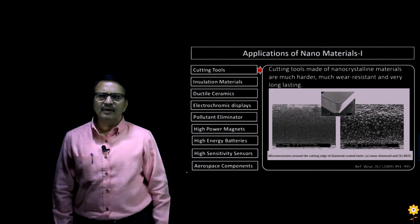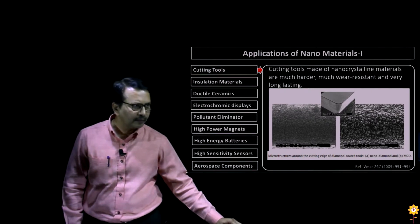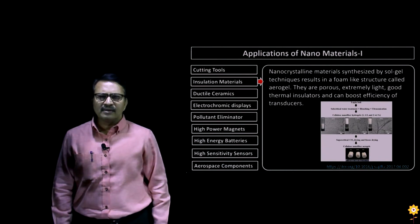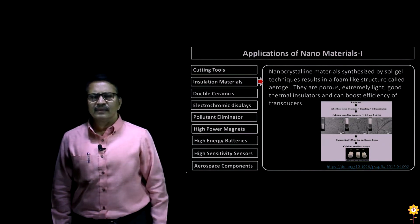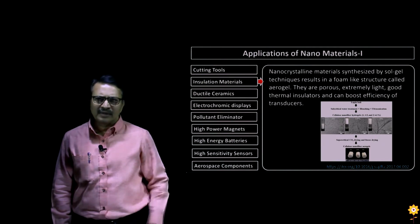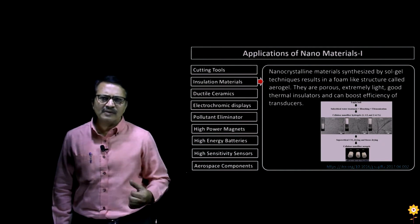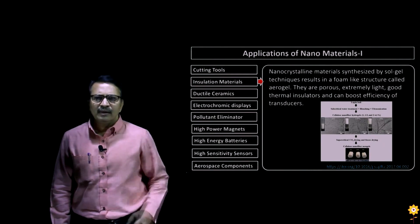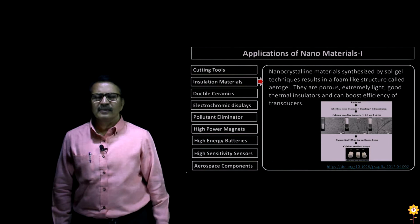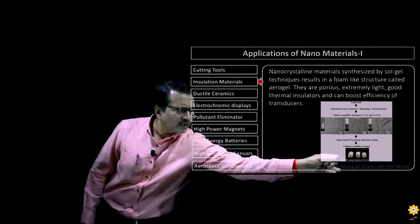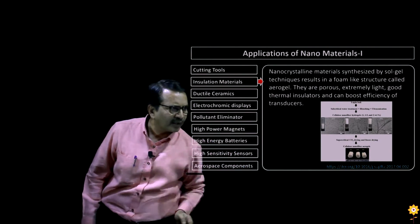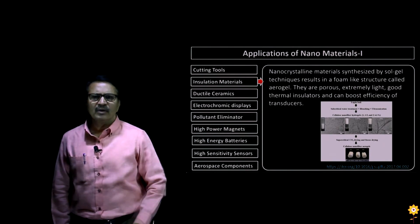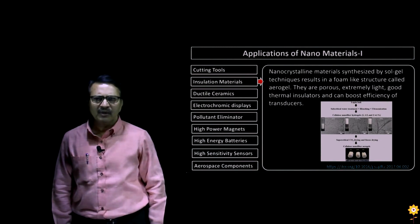We now move to the next application of nanomaterials, especially insulating materials. Nanocrystalline materials synthesized by the Sol-gel method are called aerogels. These aerogels are highly porous but at the same time very light, and also thermally insulating — they can actually improve the performance of transducers. Here is an example of a cellulose aerogel fiber, which finds an application in a transducer and can improve the efficiency of a transducer.